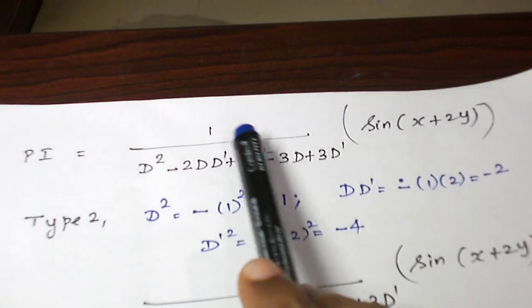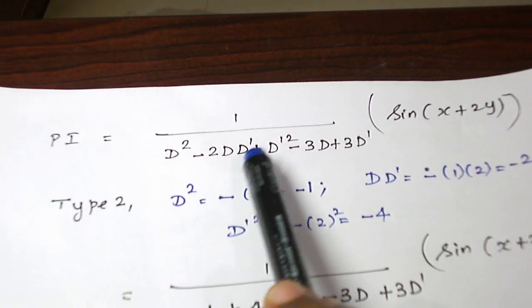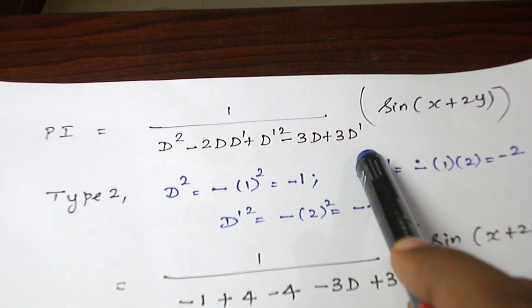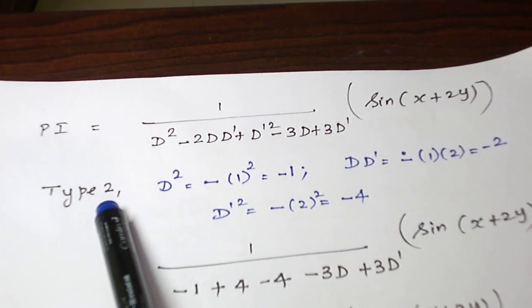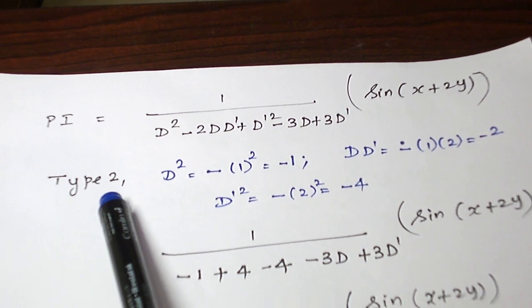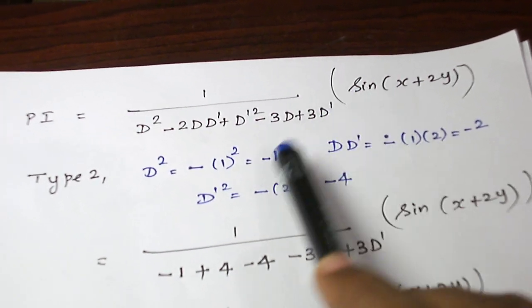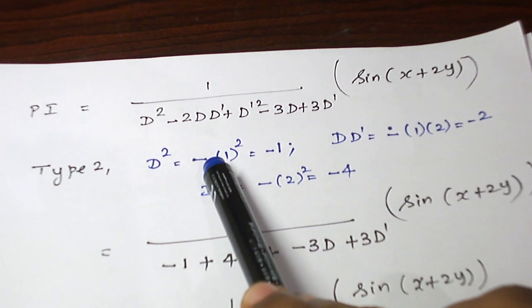Now, the particular integral, 1 by d square minus 2d dash plus d dash square minus 3d plus 3d dash of sine of x plus 2y. It is a type 2 partial differential equation, right hand side. So in type 2, we take x coefficient, square it and put minus sign.